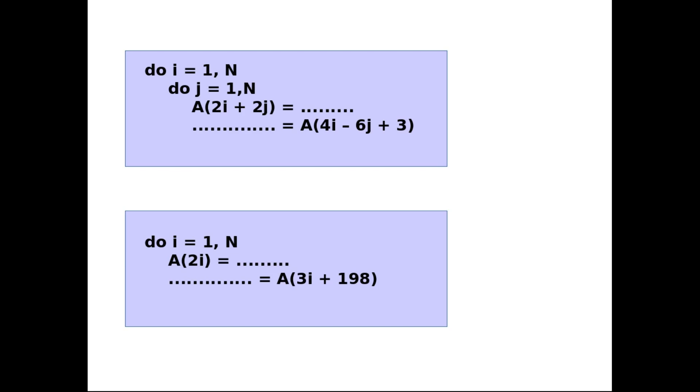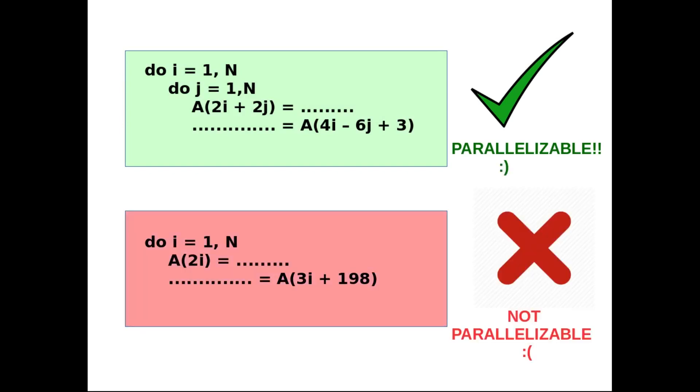So here we have two loops and we are interested to find out which of these two loops is parallelizable. We know that a loop is parallelizable if dependencies do not exist. So basically we want to find out in which of these two loops dependencies exist. And as we will find out later in today's class, this loop is parallelizable whereas this loop is not parallelizable.